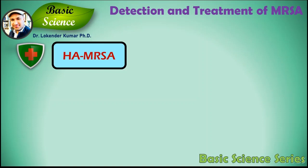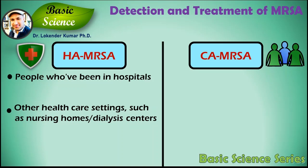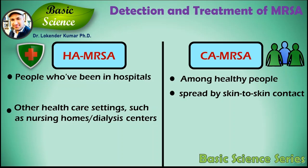Most MRSA infections occur in people who have been in hospitals or other healthcare settings such as nursing homes and dialysis centers. When it occurs in these settings it is known as healthcare-associated MRSA, or HA-MRSA infection. Another type of MRSA infection that has occurred in a wider community among healthy people is known as community-acquired MRSA infection.